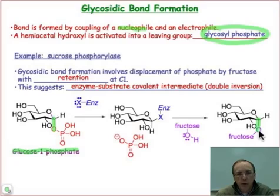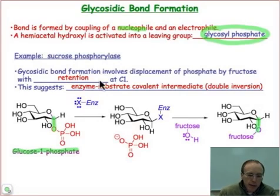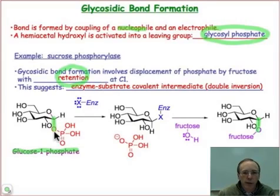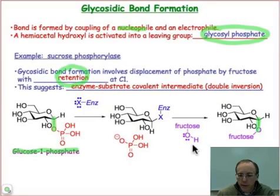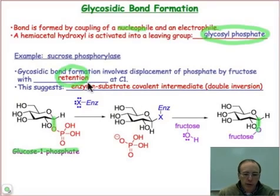So fructose is the nucleophile. Its hydroxyl group at the C2 position is what's going to serve as the nucleophile. A key part of the mechanism is that there's a retention of stereochemistry. We start with alpha glucose-1-phosphate, and we end up forming the alpha configuration at glucose — so there's a retention of configuration.